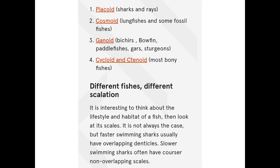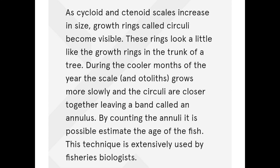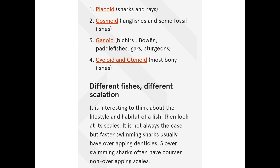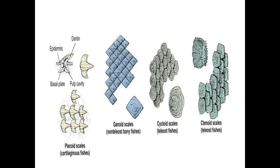Placoid scales are present in sharks and rays. Cosmoid scales are found in lungfishes and some fossil fishes. Cycloid and ctenoid scales are mostly found in bony fishes. As cycloid and ctenoid scales increase in size, growth rings called circuli become visible. These rings look like growth rings and show how the age of fishes increases.